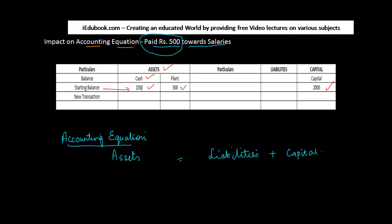When you pay rupees 500 towards salaries, you are paying in cash. Cash is an asset. When you make a payment, your available balance will reduce. If I have 500 rupees and I give it to you, my balance reduces. So cash is going to be reduced by 500. My original balance was 1500, I have paid 500, so what I'm left with is 1000.